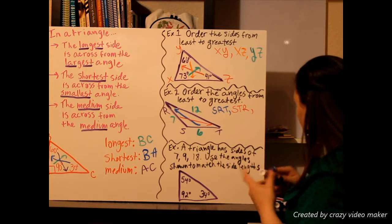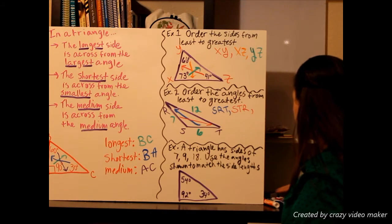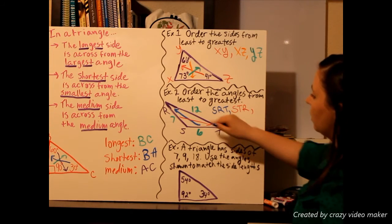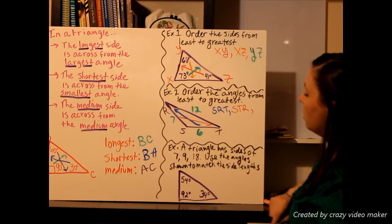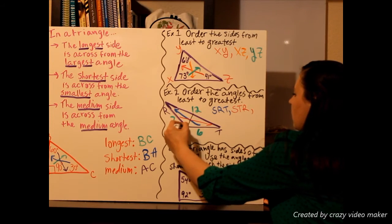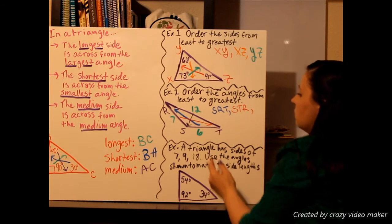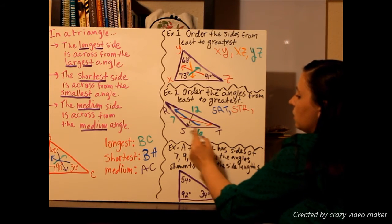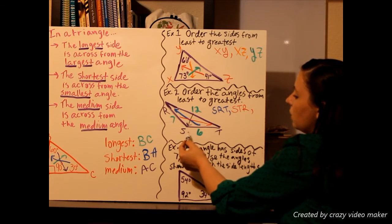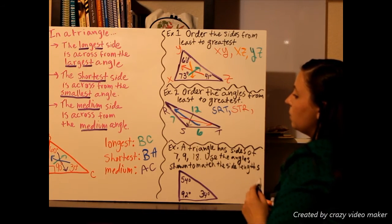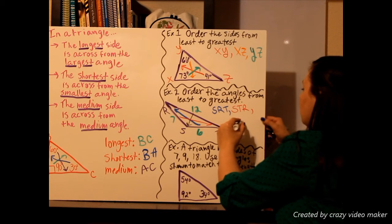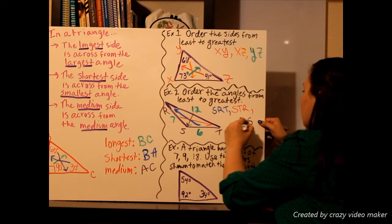Now for the last angle — our largest one. We look at our longest side, which is 12, and draw directly across. Our largest angle points to angle S, and since S needs to be in the middle, we name it RST. That will be my largest angle.